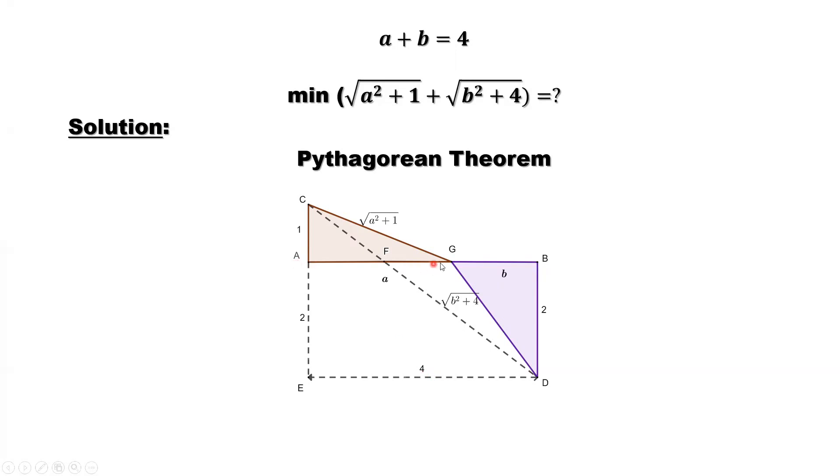From a to g, the distance is little a. From g to b is little b, such that a plus b equals 4.